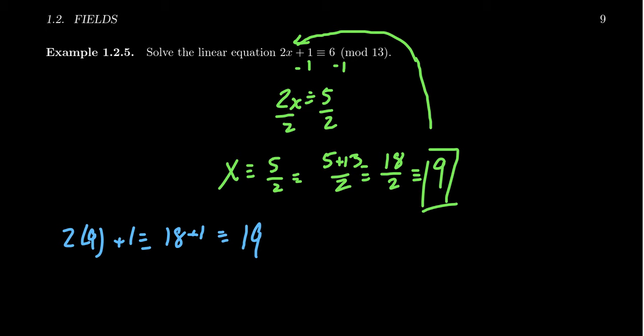This would give us 19, which of course, if you take 19 minus 13, this is 6 again, thus verifying we found a solution to the linear equation.